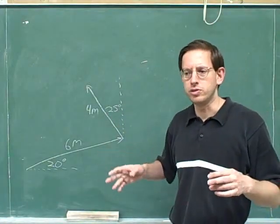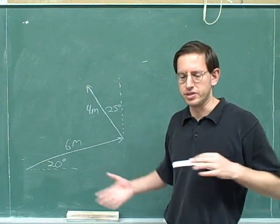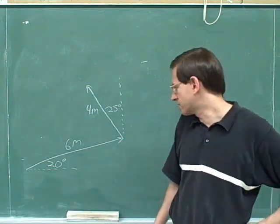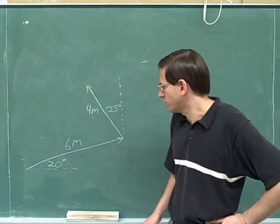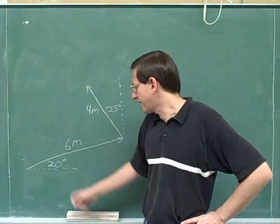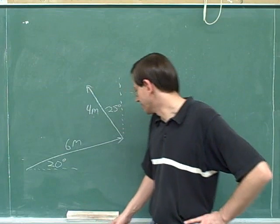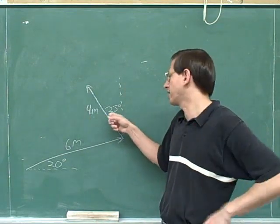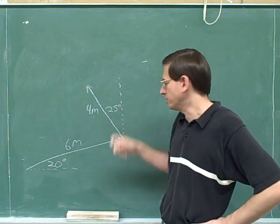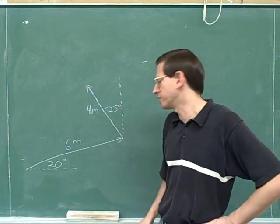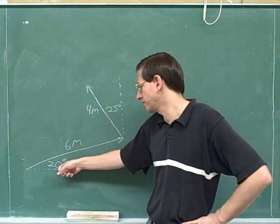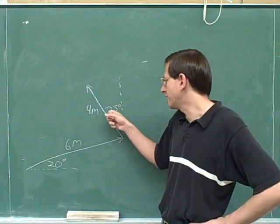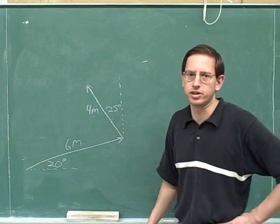Here's the problem we used to introduce this series of videos. A person walks 6 meters at an angle of 20 degrees above the horizontal, then switches direction and walks 4 more meters at an angle of 25 degrees with the vertical. I hope you can read the information on the board — this is 6 meters at 20 degrees with the horizontal, and this is 4 meters at 25 degrees with the vertical.